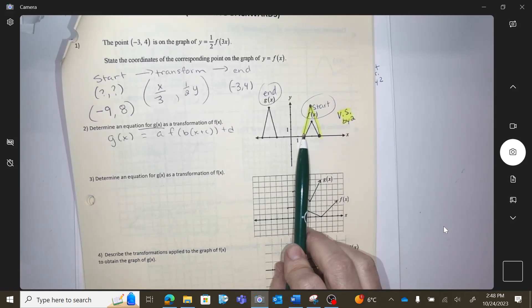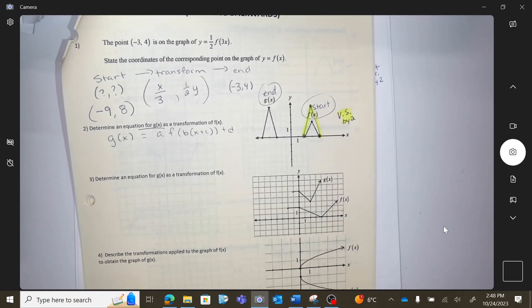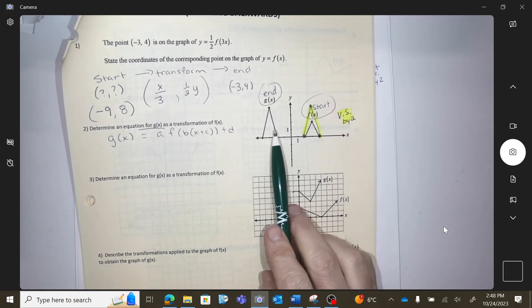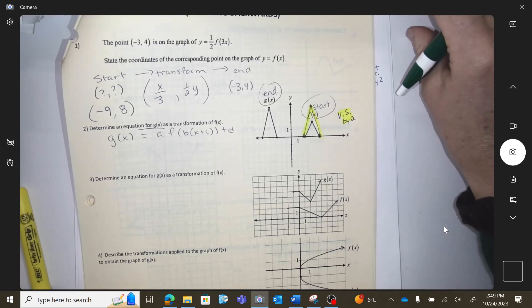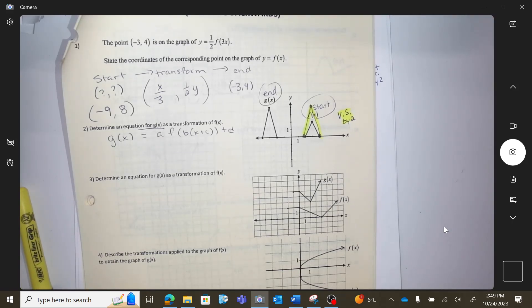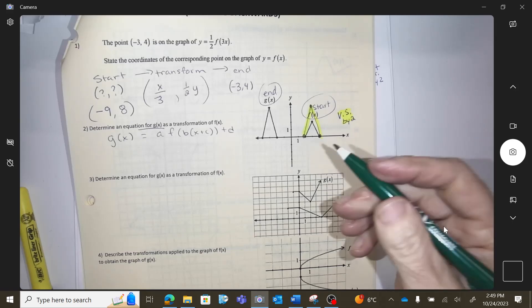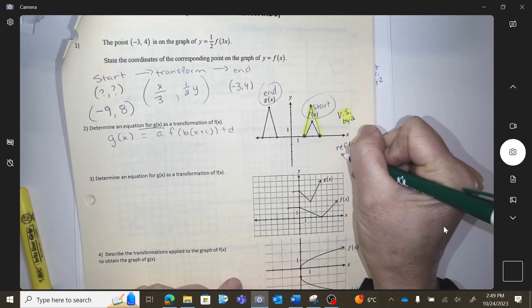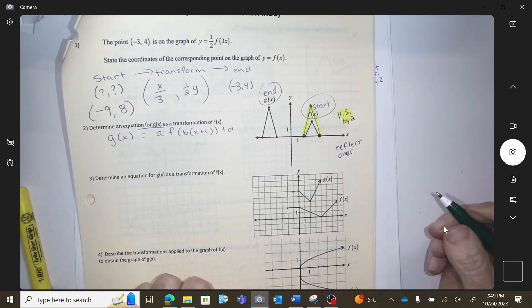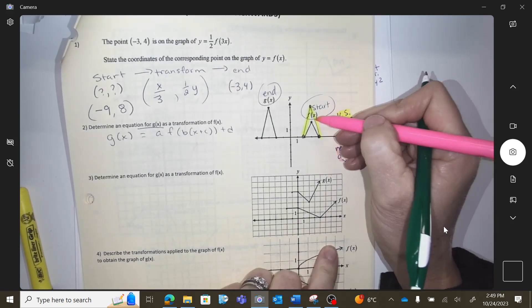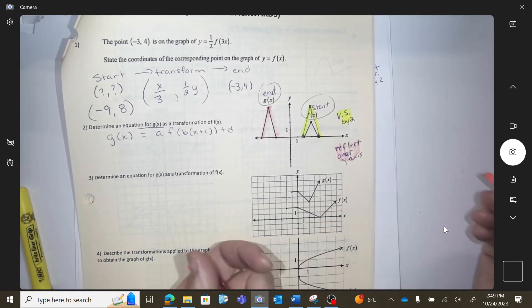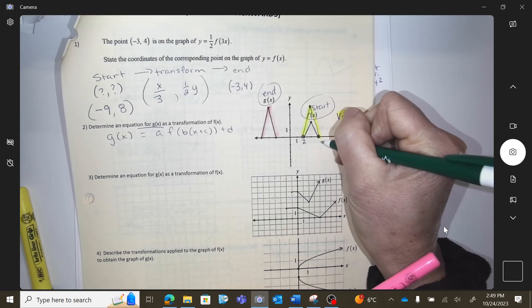Now look at my yellow graph. What are you going to do to go from my yellow to the end? How can you get from the yellow graph to this g graph? What would you want to do? There's two different ways we can do it. Reflect. Reflect. Reflect over what? Over the y-axis.